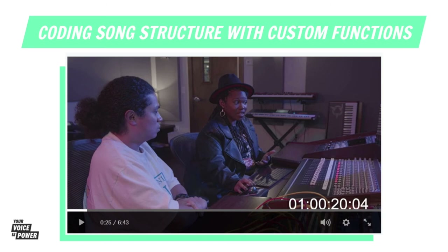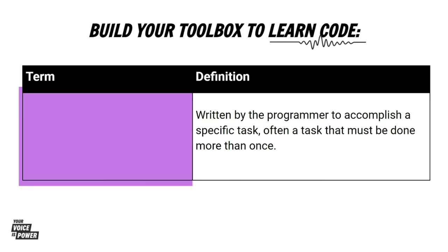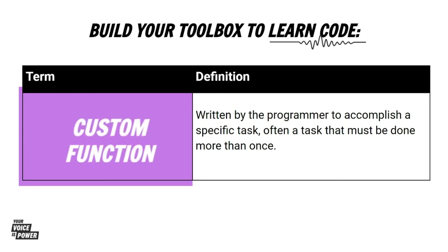Wasn't that amazing? Chalice was able to define her own functions to create a verse and a chorus without writing lines and lines of code. Now it is our turn to practice writing these custom functions in your sketch. You have already used many functions such as Fit Media and Set Tempo, but now you will actually create your own. Custom functions are written by the programmer to accomplish a specific task, often a task that must be done more than once. Custom functions are an effective way to code sections, helping to avoid repetitive code.